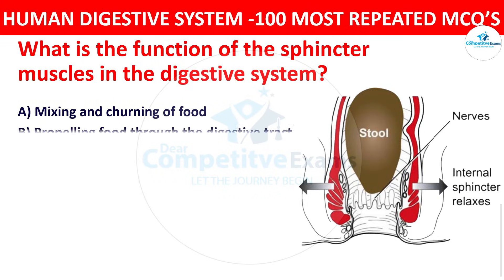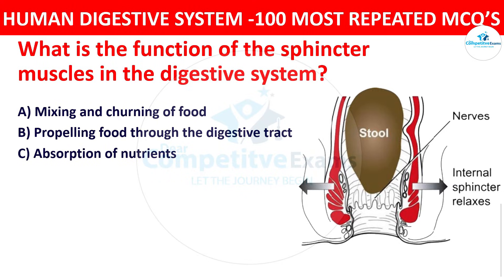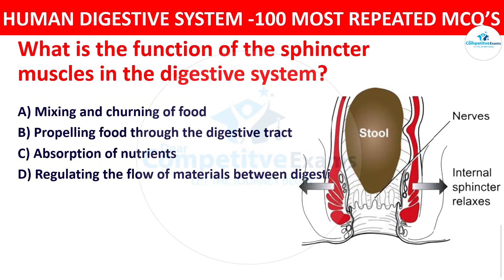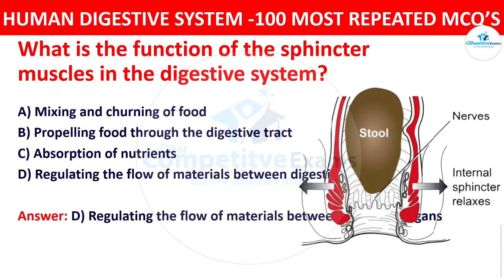Question number thirteen: What is the function of the sphincter muscles in the digestive system? The options are mixing and churning of food, propelling food through the digestive tract, absorption of nutrients, or regulating the flow of materials between digestive organs. The right answer is regulating the flow of materials between digestive organs. The sphincter muscles act as valves controlling the movement of materials between different parts of the digestive system.